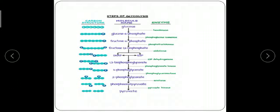The 3-phosphoglycerate is converted to 2-phosphoglycerate by phosphoglycerate mutase. This is an isomerization reaction. The high-energy compound phosphoenolpyruvate is generated from 2-phosphoglycerate by the enzyme enolase.